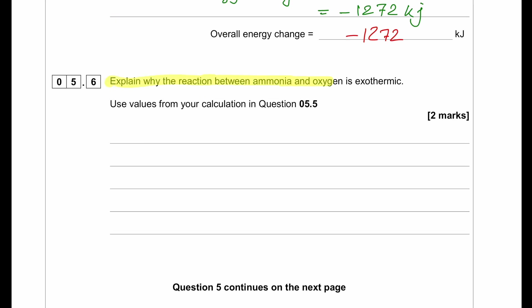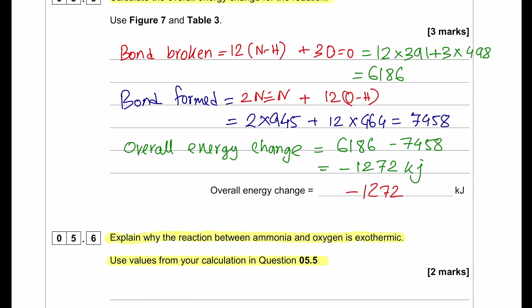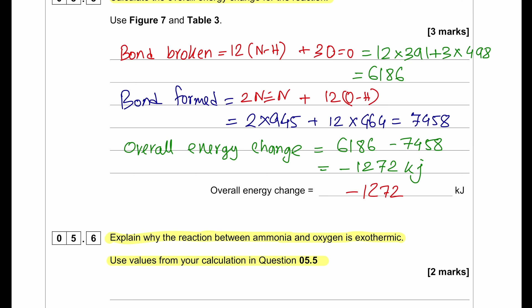Explain why the reaction between ammonia and oxygen is exothermic. Use values from your calculation in question 5.5. We can see that 7,458 kJ is released as energy and 6,186 kJ is needed as energy. Since the energy released is greater than the energy needed to break the bonds, the overall reaction is exothermic because energy is released to the surroundings.